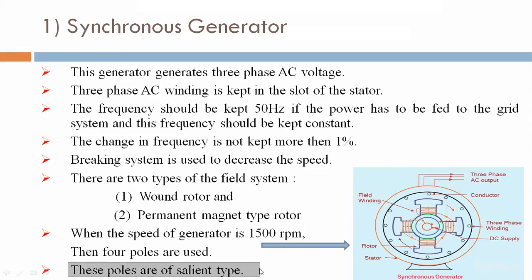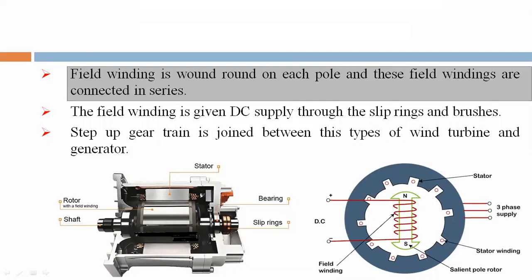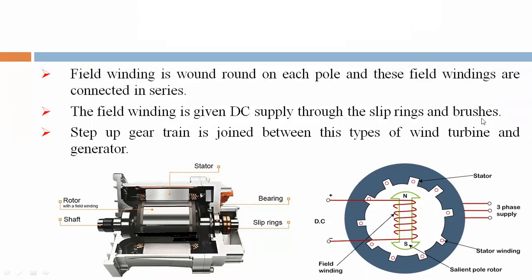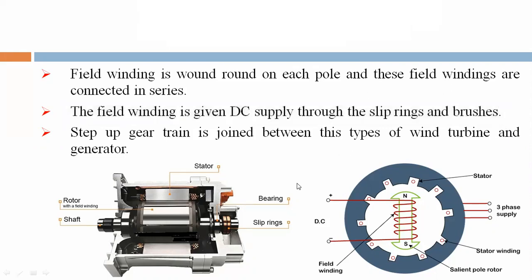These poles are of salient type. The field winding is wound around each pole and these field windings are connected in series. The field winding is given DC supply through the slip ring and brushes — see that arrangement represented in the figure.